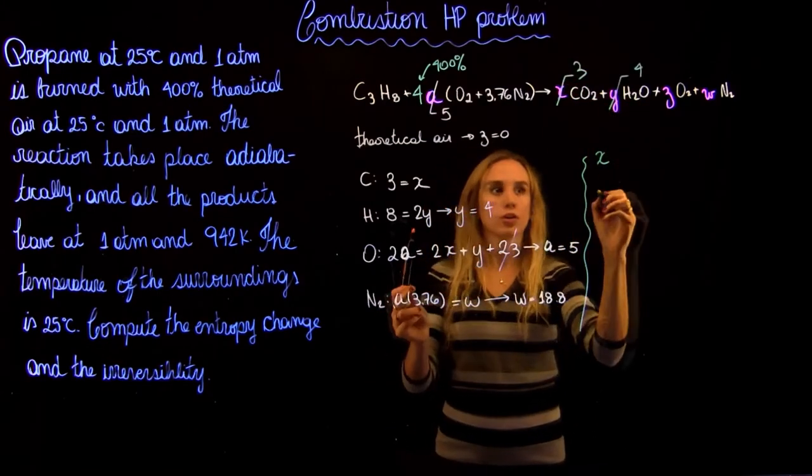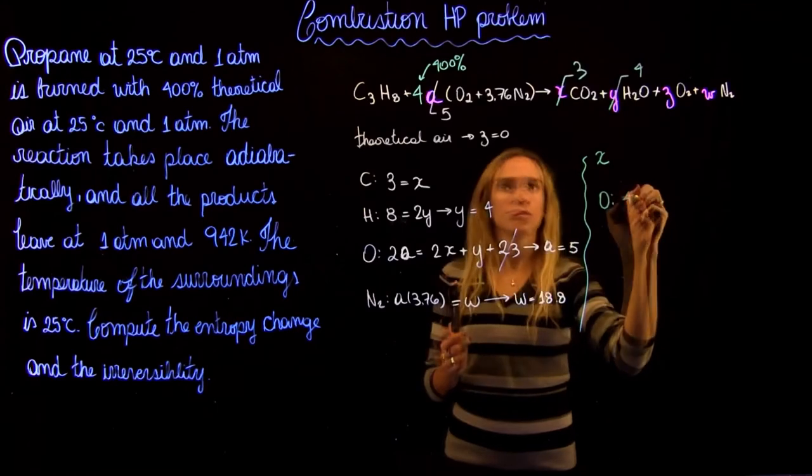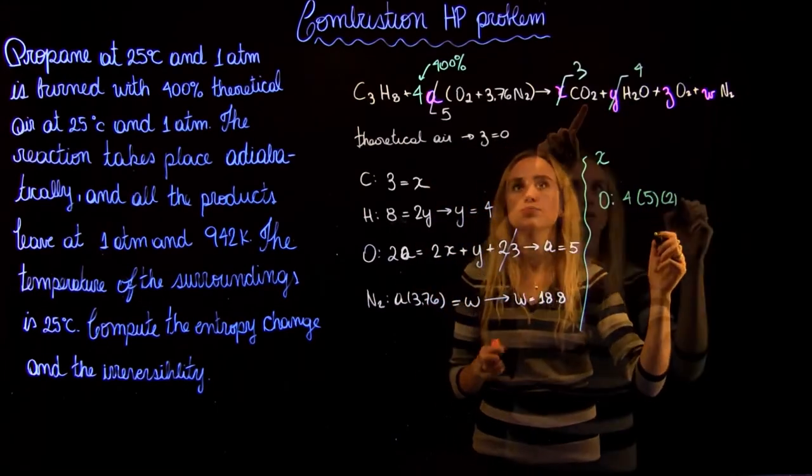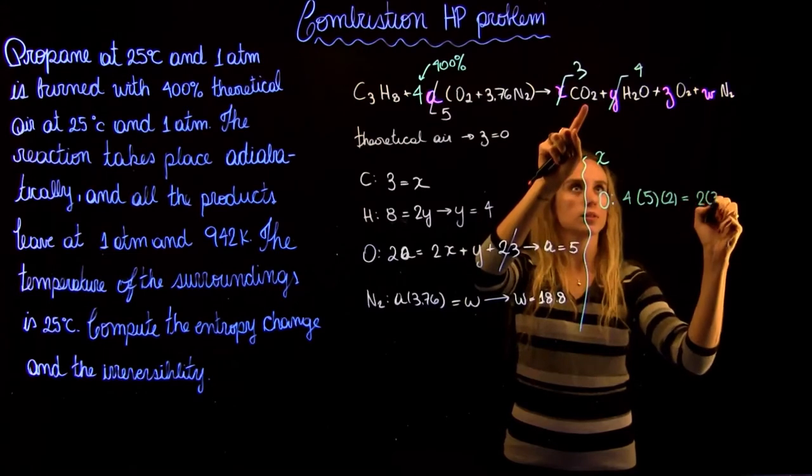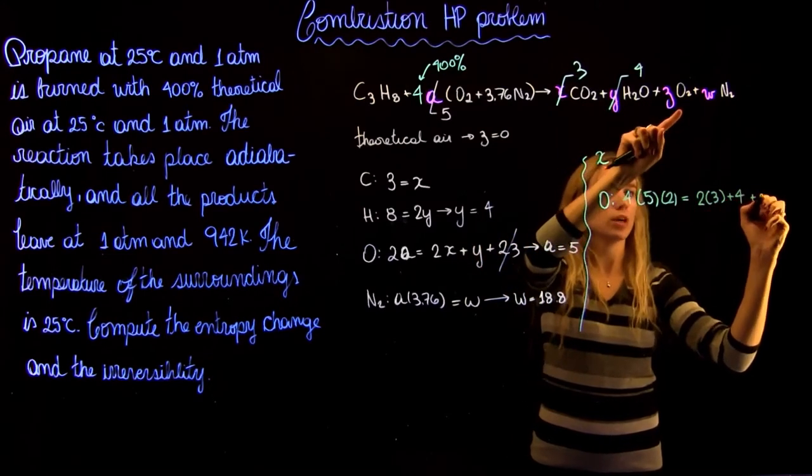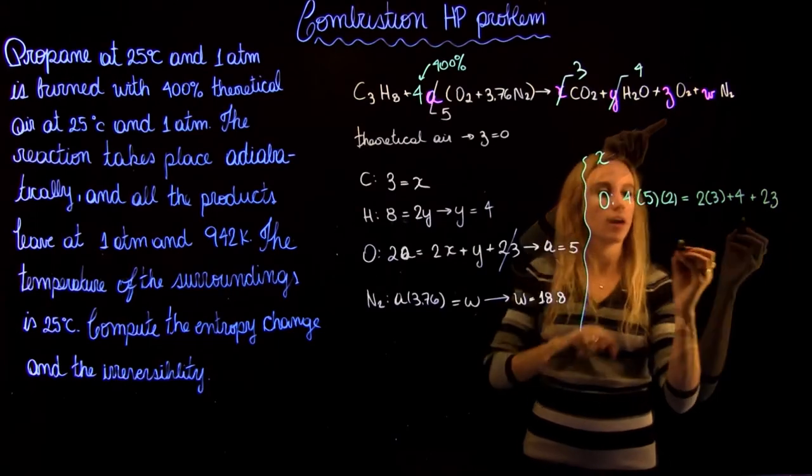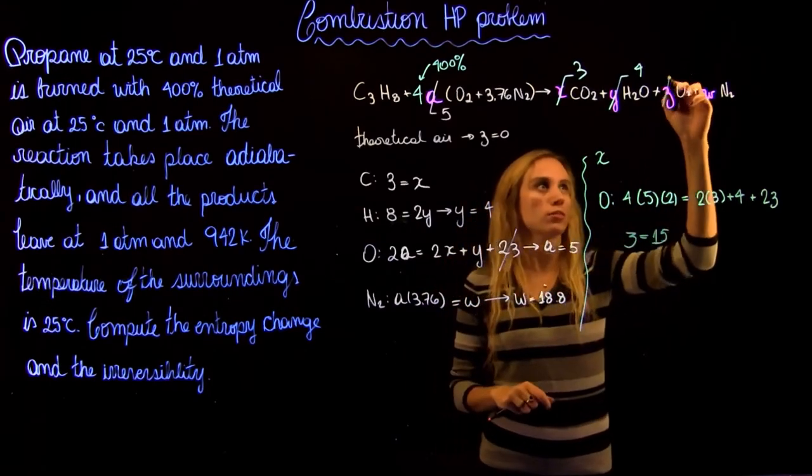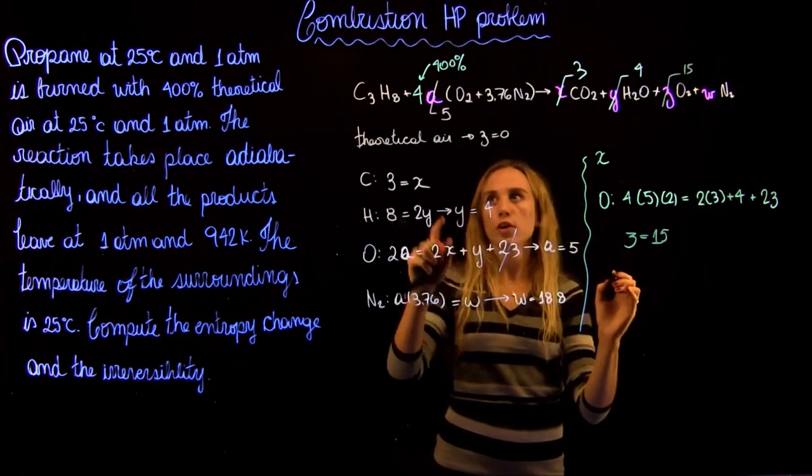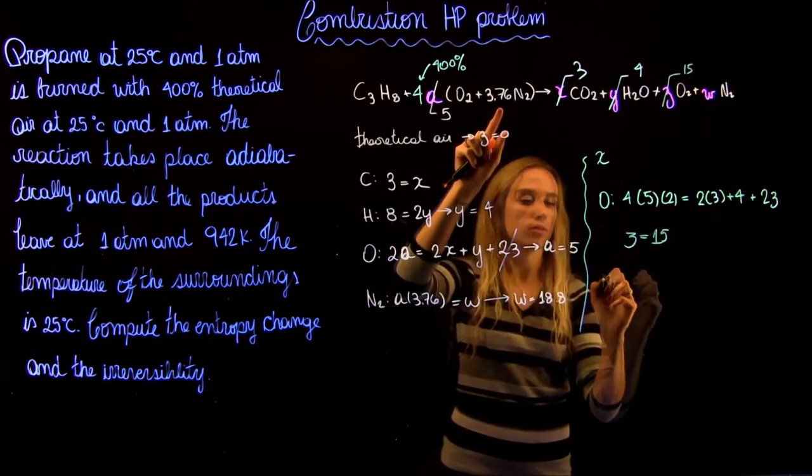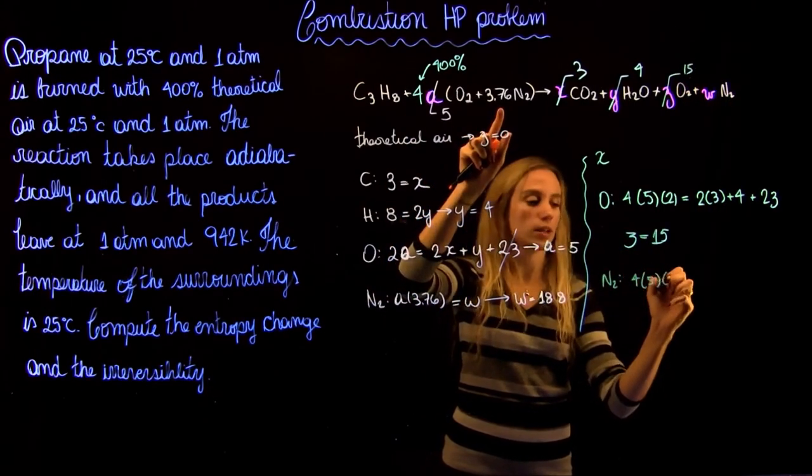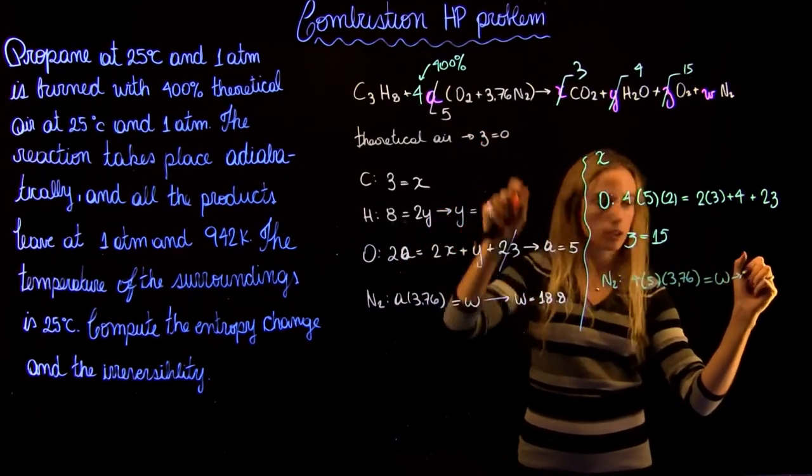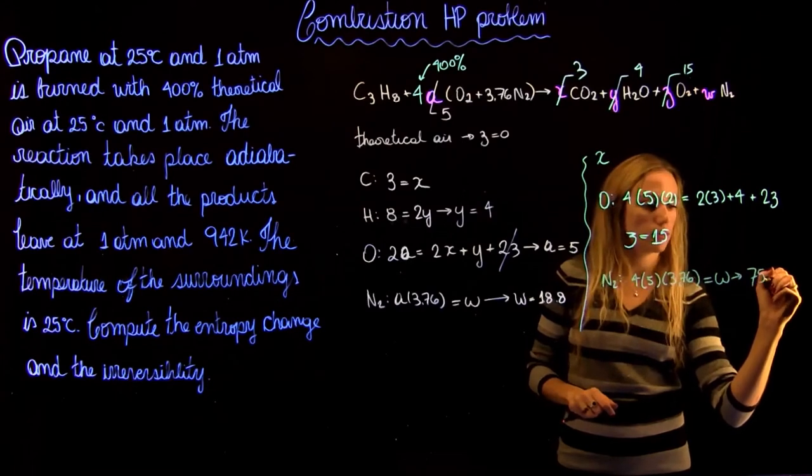But now for our oxygen, we're going to have 4 times 5 times 2 for the oxygen equals to 2 times 3 plus 4 plus 2Z. And we're going to find a value of Z of 15. So this is going to be 15. And then for our nitrogen, we're going to have 4 times 5 times 3.76 equals to W, and we're going to find W is going to be equal to 75.2.